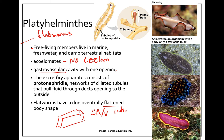Flatworms do, however, need an osmoregulatory system. They have protonephridia — tubules running throughout the entire body that connect to ducts on the outside of the body. These pull fluid through them to help maintain water balance throughout the body.